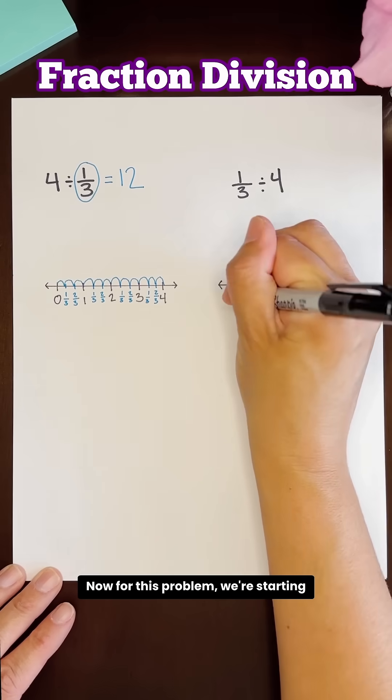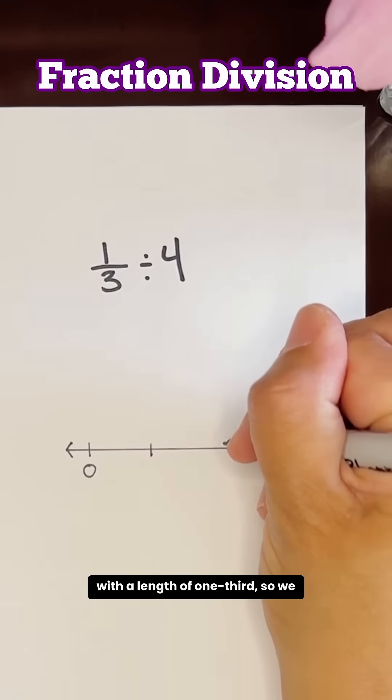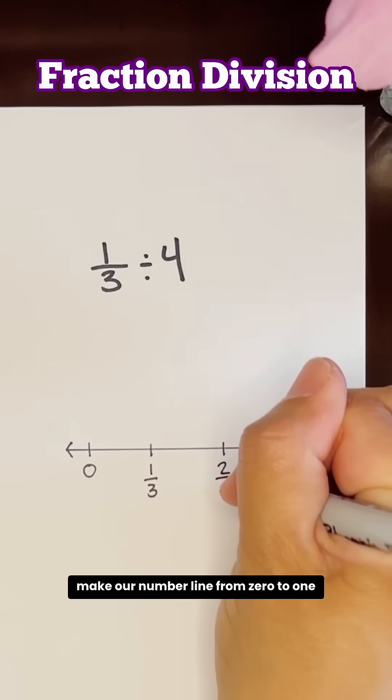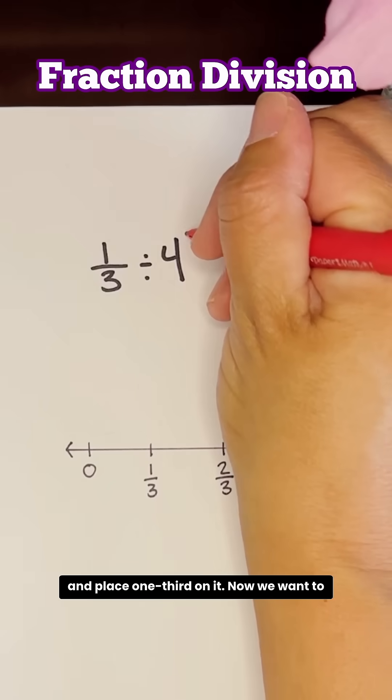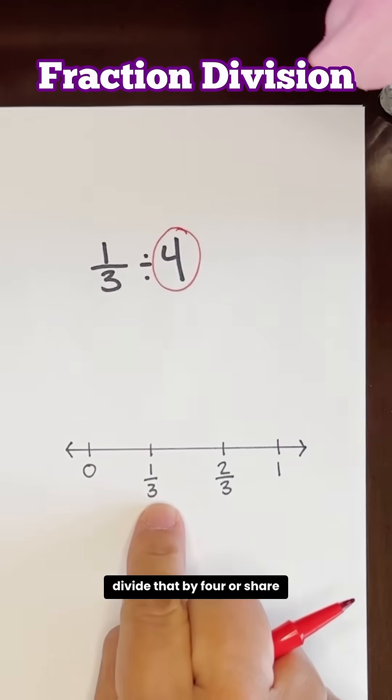Now for this problem, we're starting with a length of one-third, so we make our number line from zero to one and place one-third on it. Now we want to divide that by four or share it between four people.